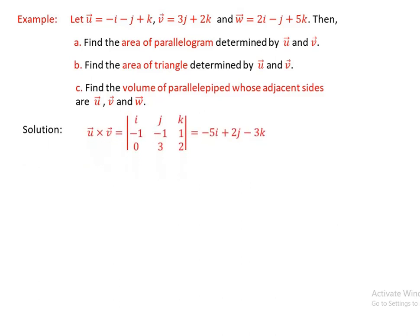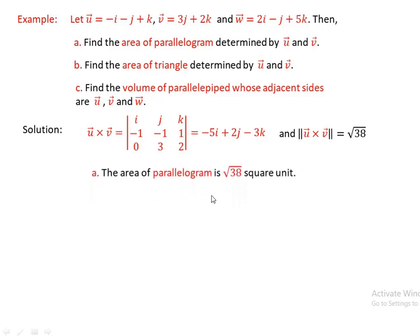For part (a), the area of the parallelogram equals the norm of u cross v. So u cross v is the determinant of the matrix with rows i, j, k and then minus 1, minus 1, 1 and then 0, 3, 2, which equals negative 5i plus 2j minus 3k. The norm of u cross v equals the square root of 38. Therefore, the area of the parallelogram is square root of 38 square units.